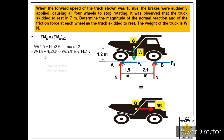Replacing mass with W/g and acceleration with −7.14, and substituting into the equation, we solve for NB in terms of W and get NB = 0.659W. Once we have NB, the friction force at B is FB = μk × NB = 0.728 × 0.659W, which gives FB = 0.48W. Answers are expressed in terms of W because the truck's weight is given as W newtons.